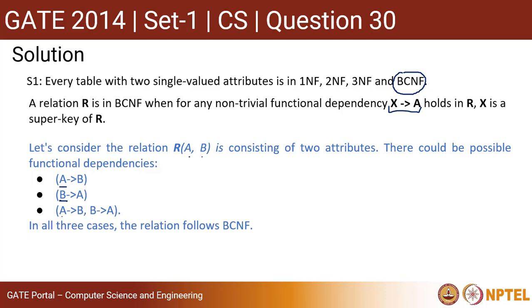So that's why A is also a super key, B is also the super key. In this case also it is in BCNF, since in any case, if I have a relation with two single valued attributes, it's always in BCNF, so it obviously will be in 3NF, 2NF and 1NF. So statement one is correct.